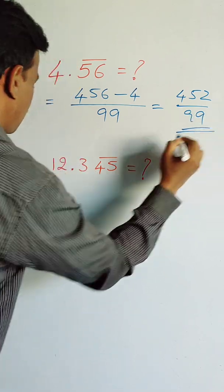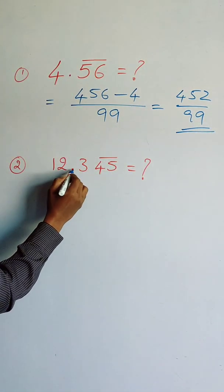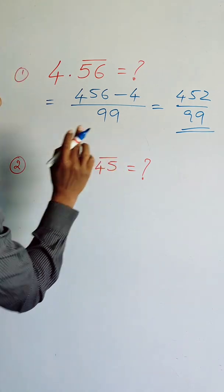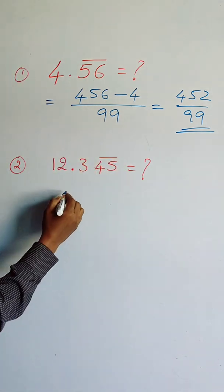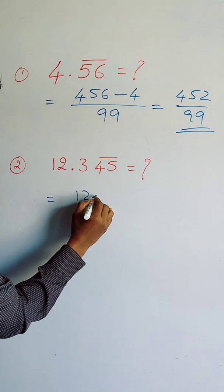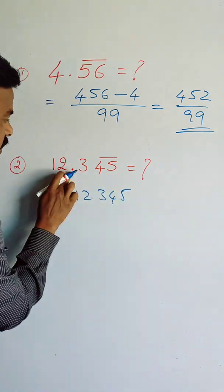This is the answer. And once you see this one, 12.3(45̄), only 45 has the bar. So this answer is 12345, just remove the point and write the number.